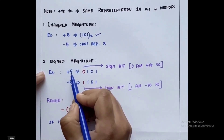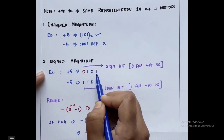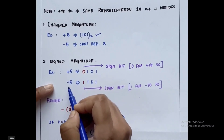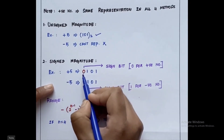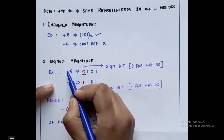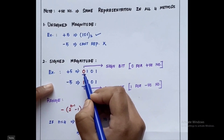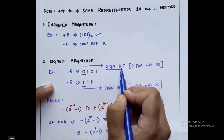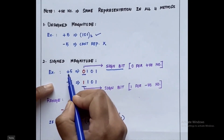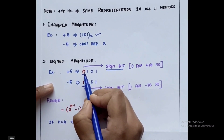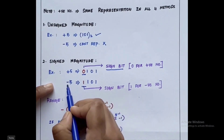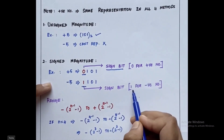For signed magnitude type, we can represent both positive and negative numbers. Plus 5 is represented as 101. When it is minus 5, the value is again 101. To differentiate between plus 5 and minus 5, we add an initial sign bit. When the MSB bit is 0, it means it is a positive number. For minus 5, the sign bit is 1. So for positive 5 it is 0101, and for minus 5 it is 1101 — the sign bit is 0 for positive and 1 for negative.